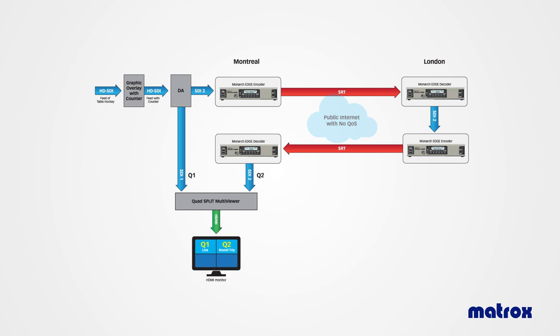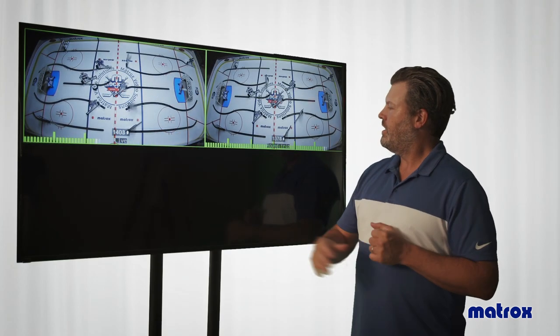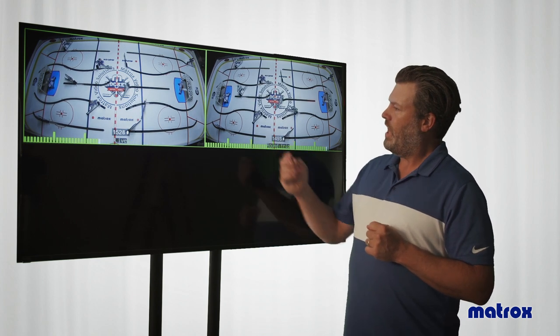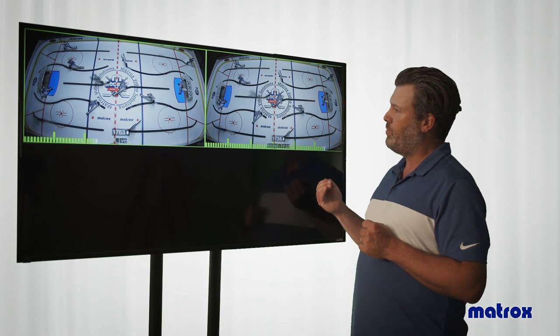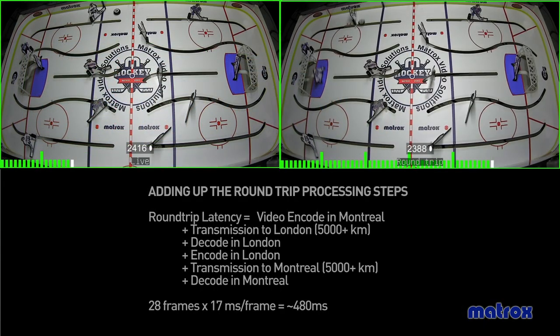Now if we take a look at the quad split multiviewer output, we have both the live and the round trip feeds, and we certainly see that there is a discrepancy in latency between the two—approximately half a second it looks like.